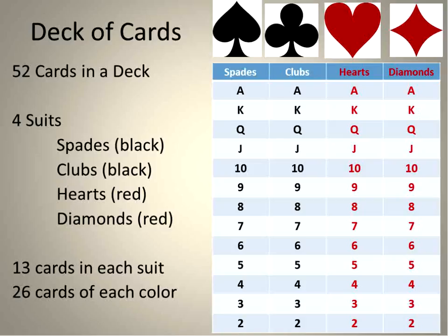For each suit, there are 13 cards. There's an ace, which is sometimes represented as a one, but it's up at the top because it's usually interchangeable. But an ace would be an A, king, queen, jack, and then the numbers two through ten.